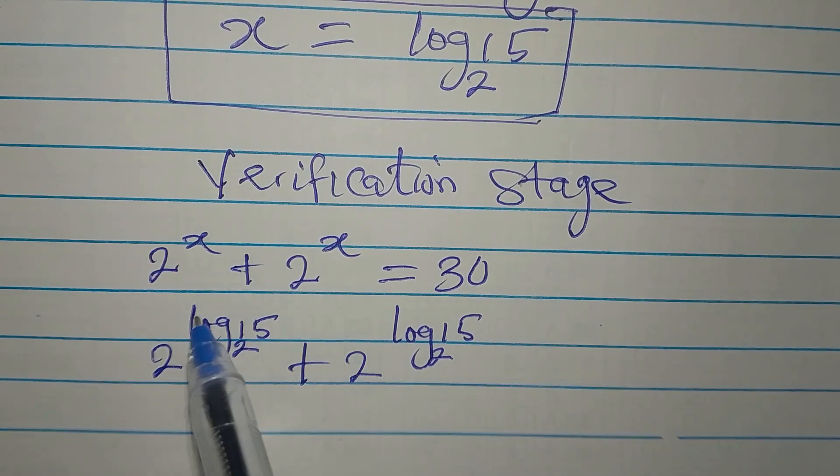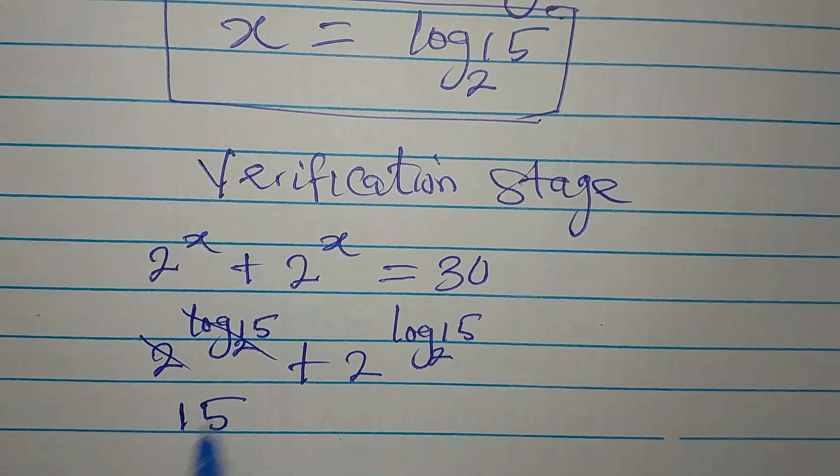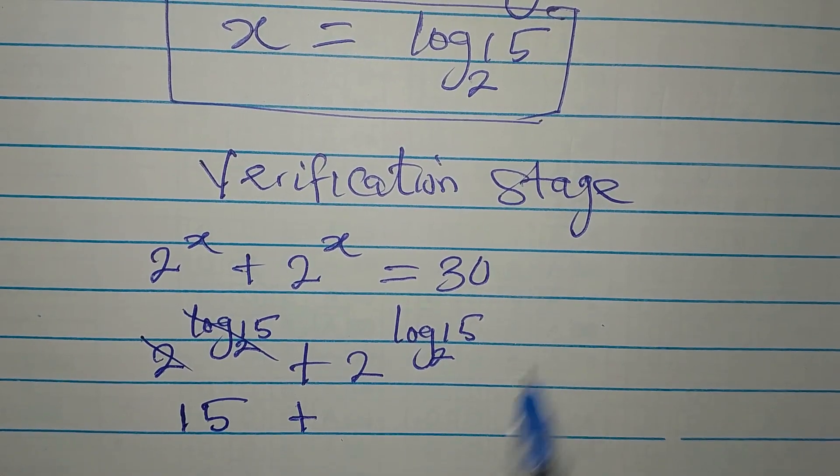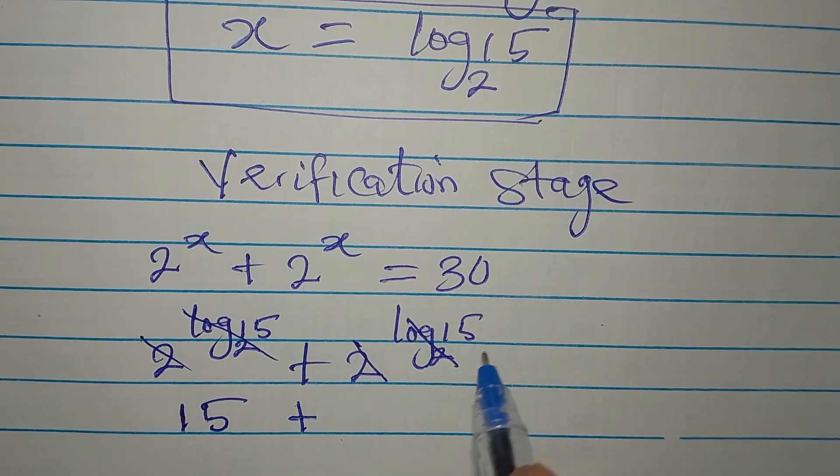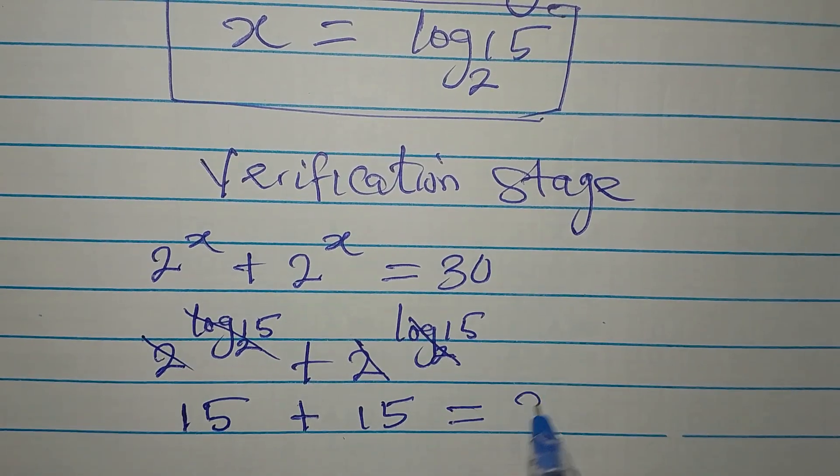And mind you, that's log to base 2, and these 2 will go. So what we have here is just 15 plus this and this will go, so it's just 15 over there. So if you add this up, we're going to have 30.